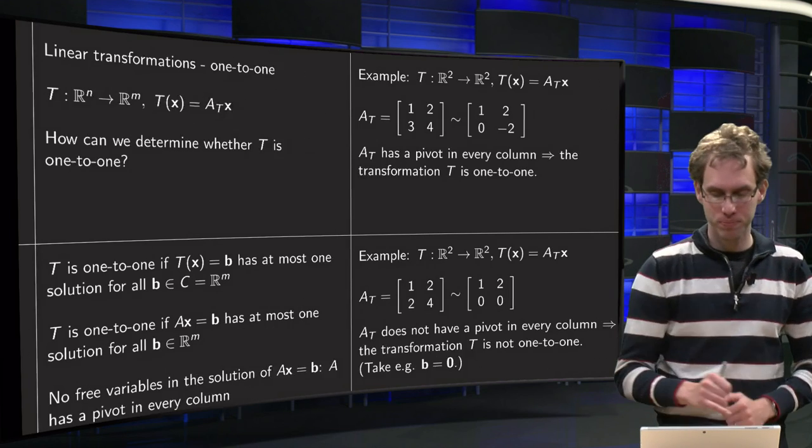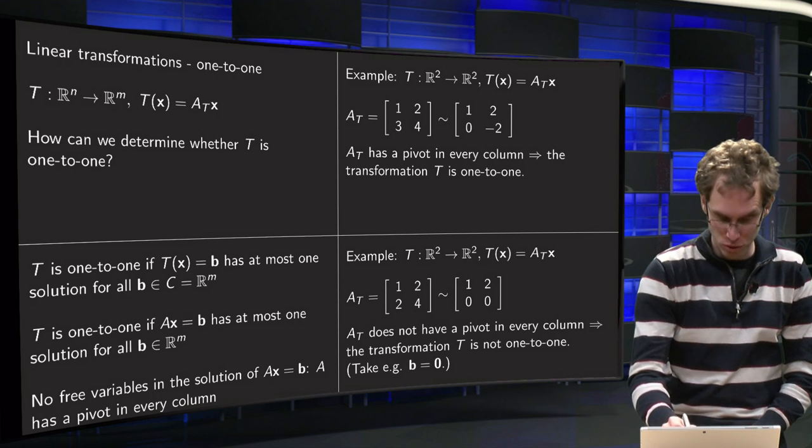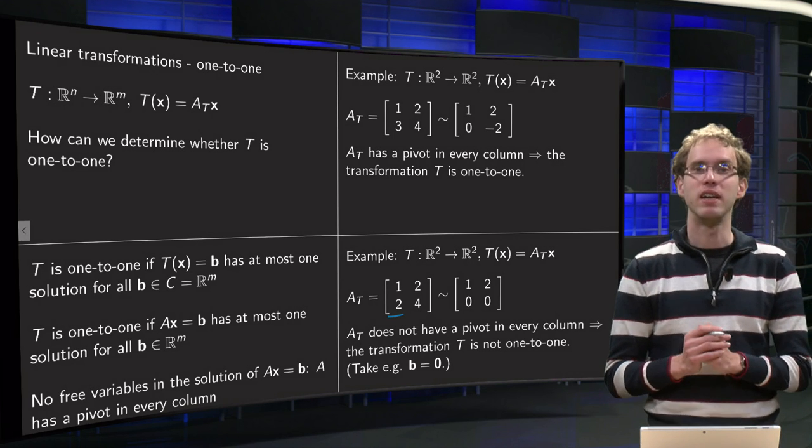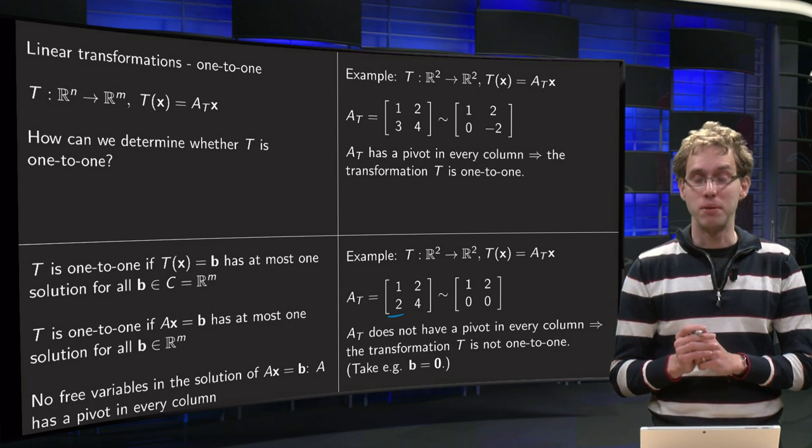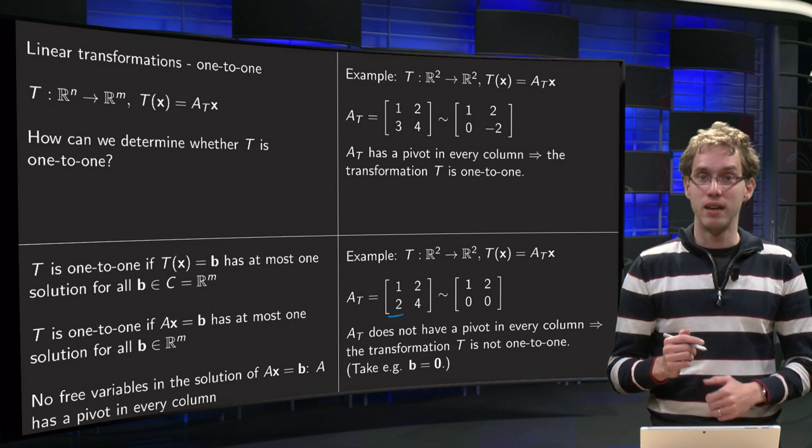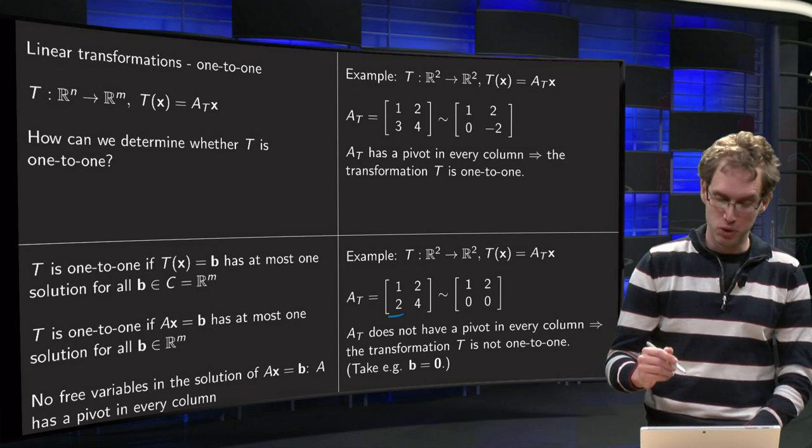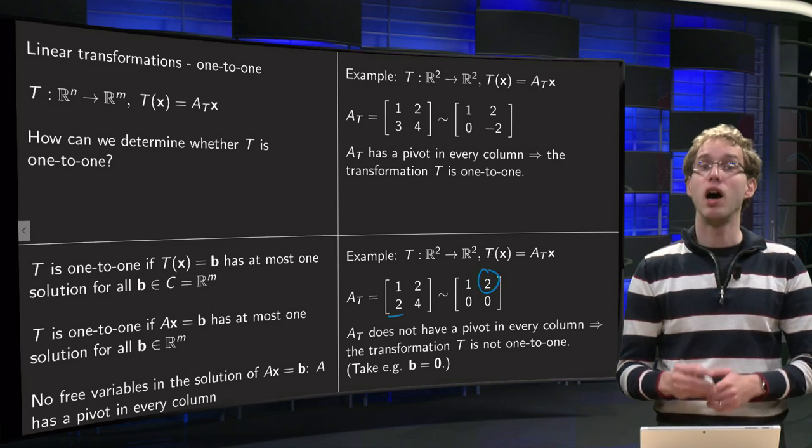Let's take another example, a slightly different matrix, not 1, 2, 3, 4 but 1, 2, 2, 4. And is this transformation T of x equals A times x 1 to 1?